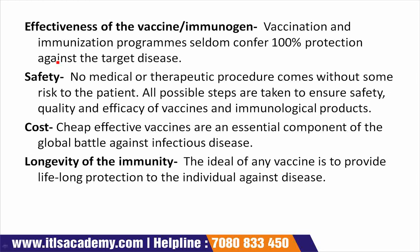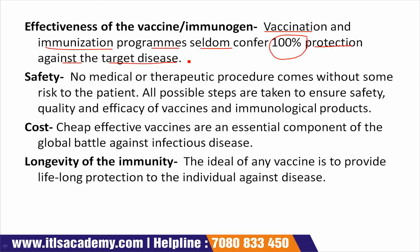The next factor in a vaccine or immunization program is effectiveness of the vaccine or immunogen. Vaccination and immunization programs seldom confer 100% protection against the target disease. More commonly, the degree of protection is 60 to 95%.